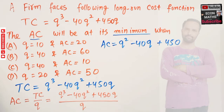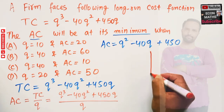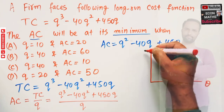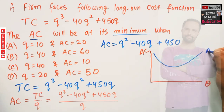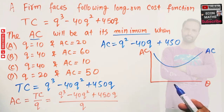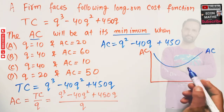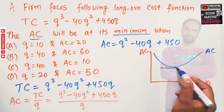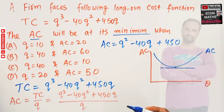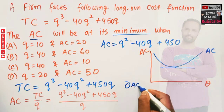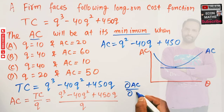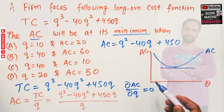We need to find at what level of output our average cost will be minimum. Graphically, if we have output on the x-axis and average cost on the y-axis, average cost is minimum at the point where its slope is equal to zero — meaning the derivative of average cost with respect to output equals zero.